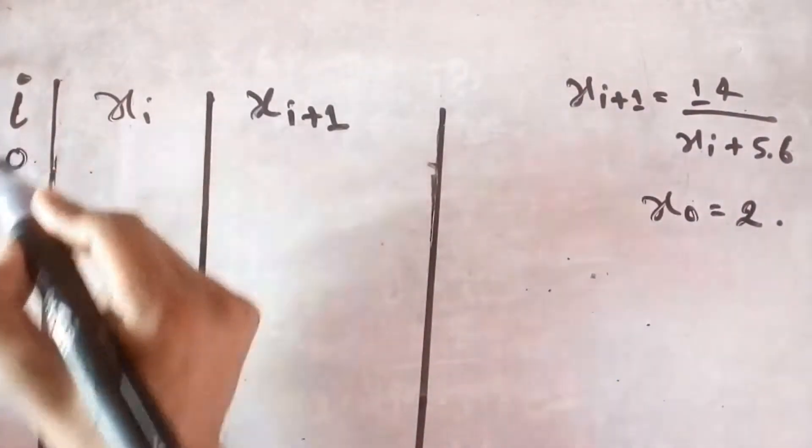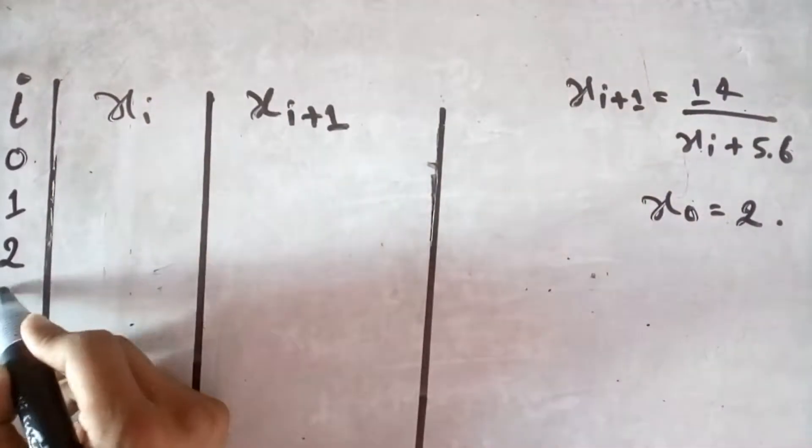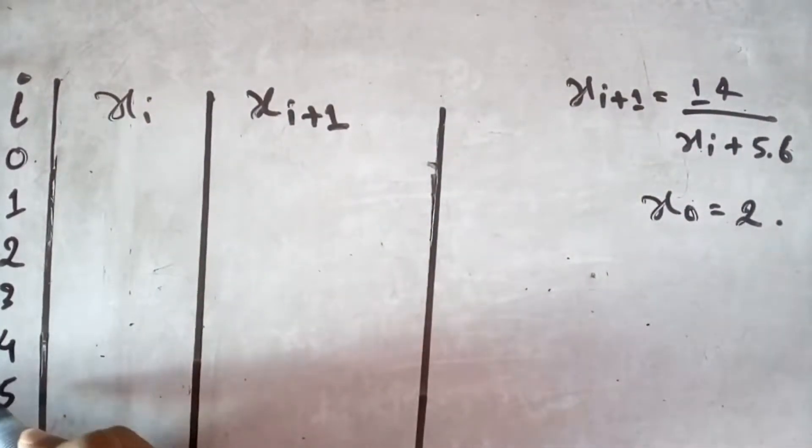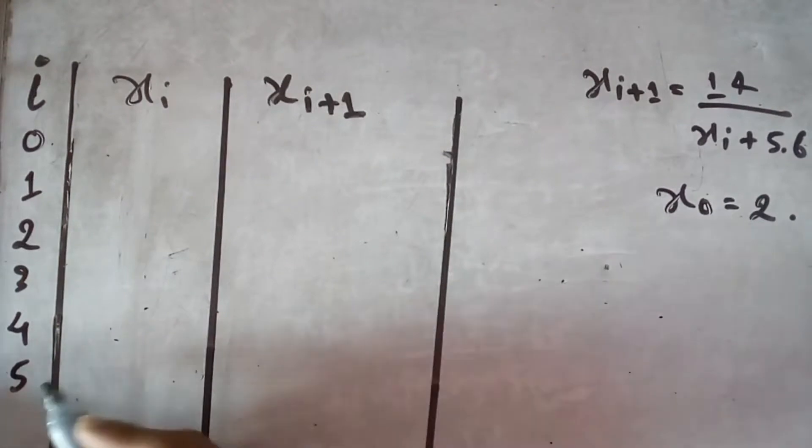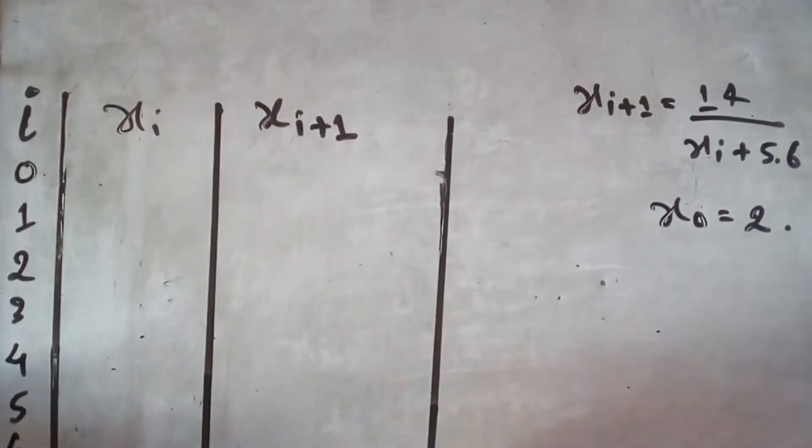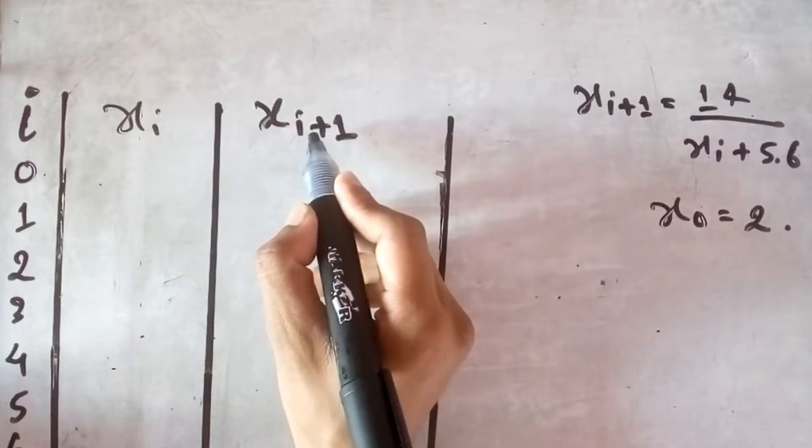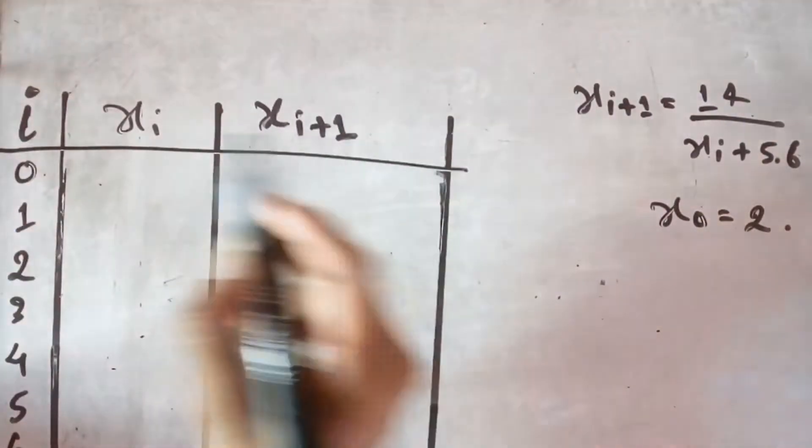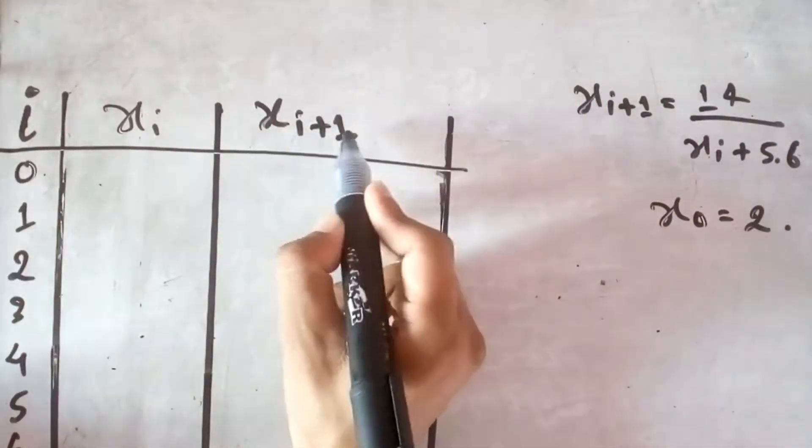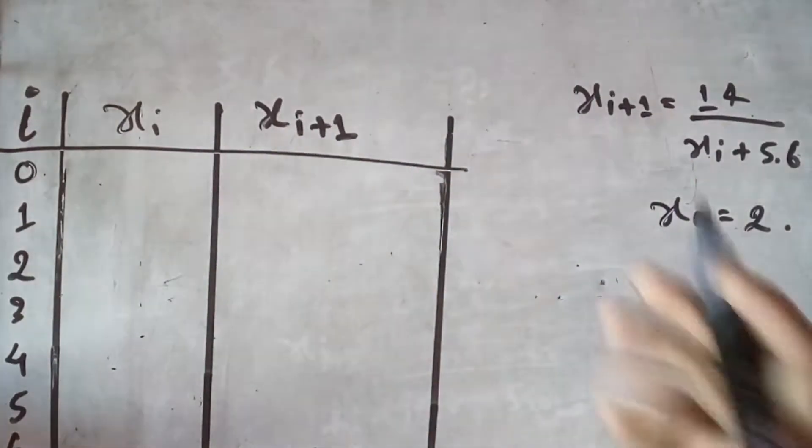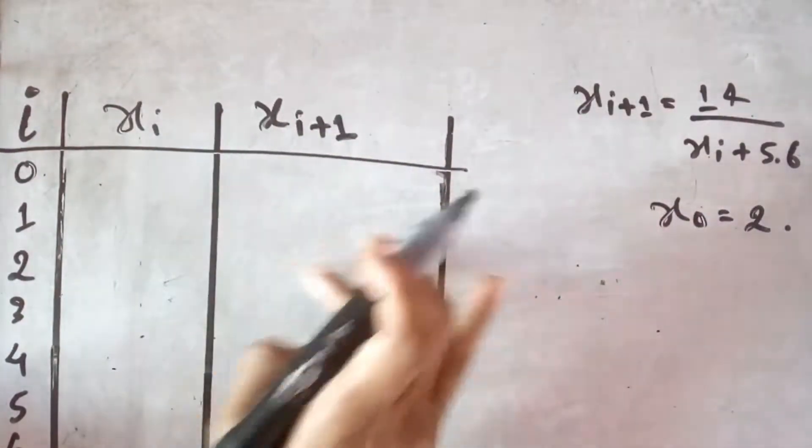Okay, here we write 0, 1, 2, 3, 4, 5, 6, 7. Here x0, it will be x1 because you know that x0, x0 plus 1 equal to x1, so by this way we get another value.